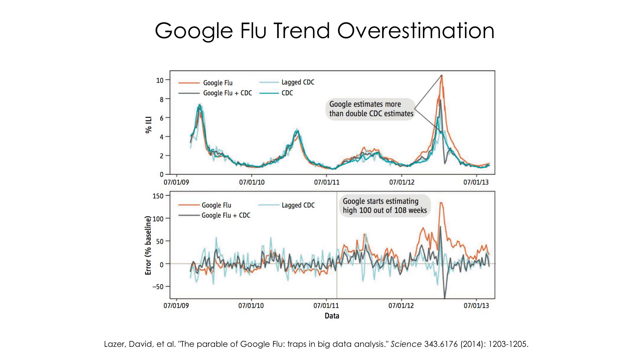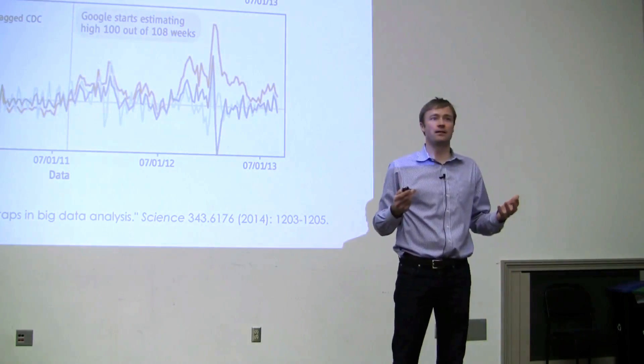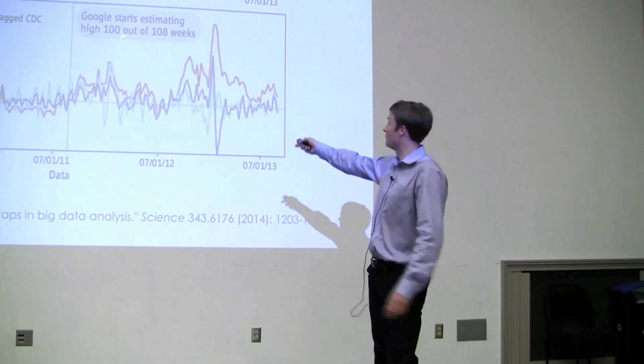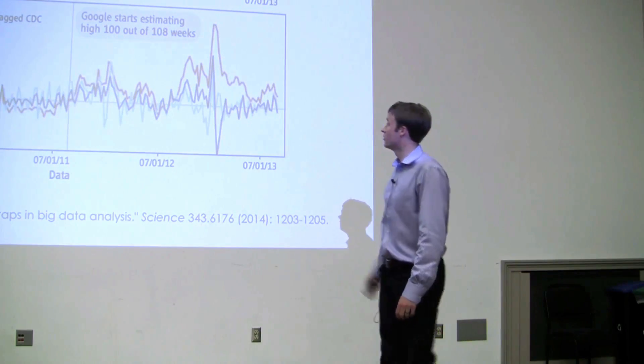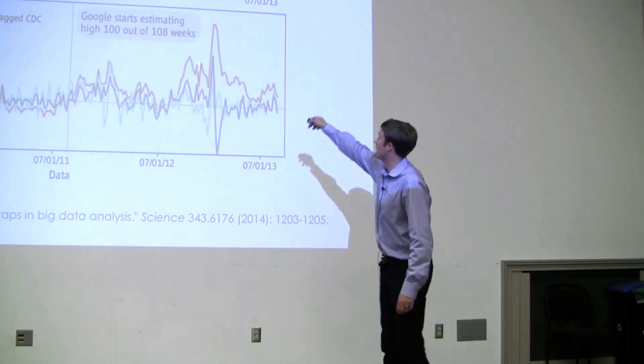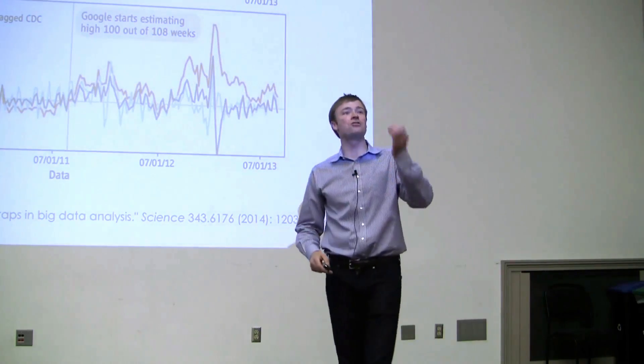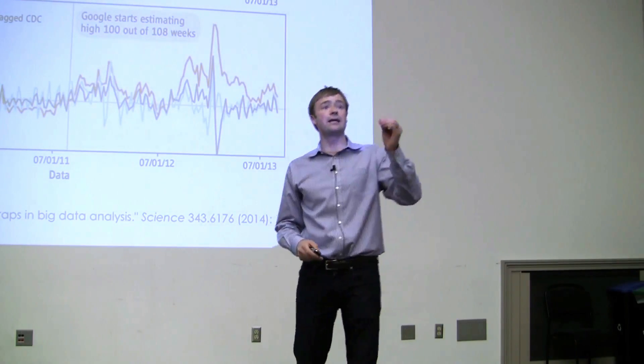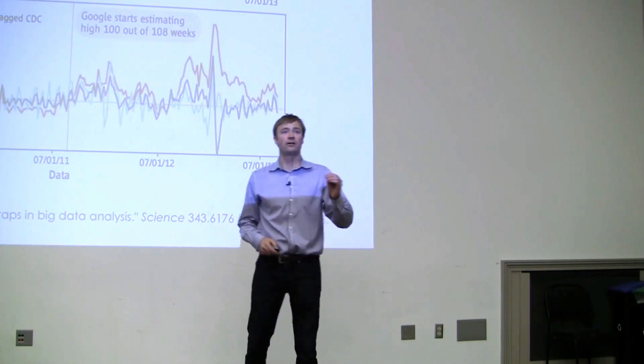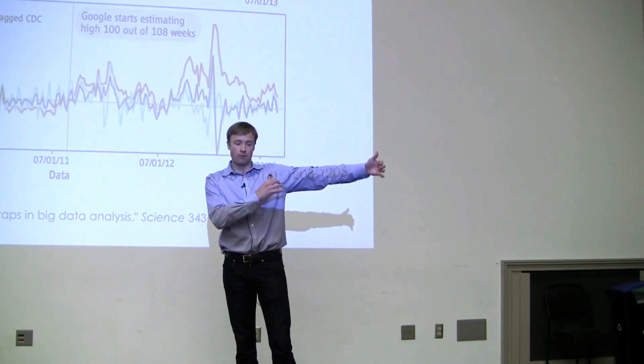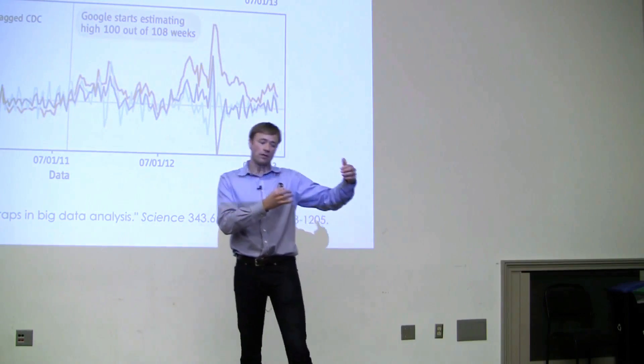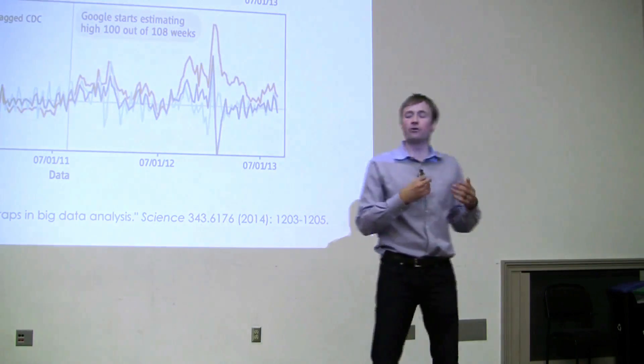There were some years, like in 2013, that it was overestimating by over 50%. Now that's a huge overestimate. And if you're 100 out of 108 weeks, you're off. What you're looking at here is the orange line. So it was overestimating all these. In fact, what they found is that if you just took a simple model, like tracking the temperature from some previous time point, that little simple model would do a better job of predicting.